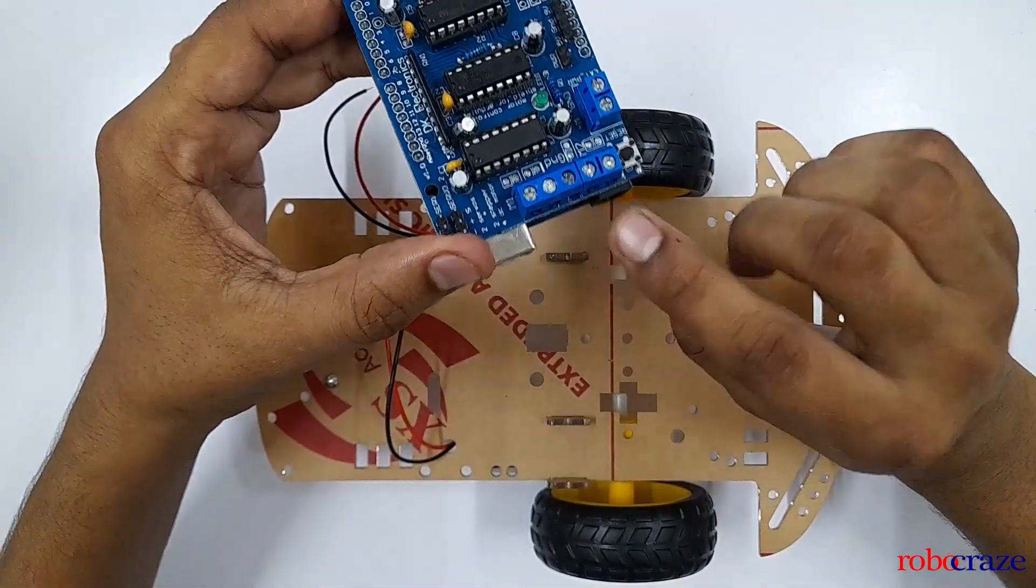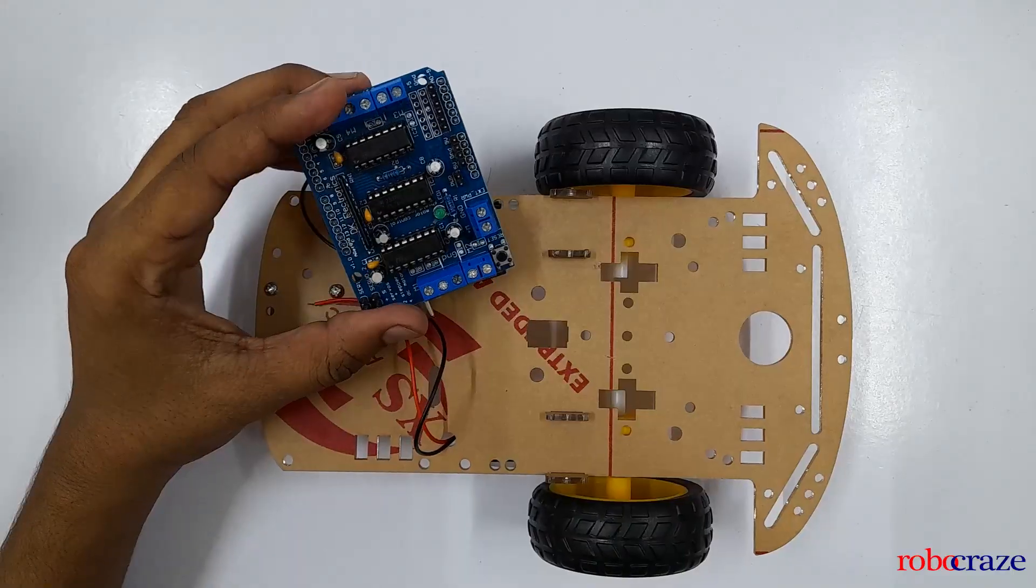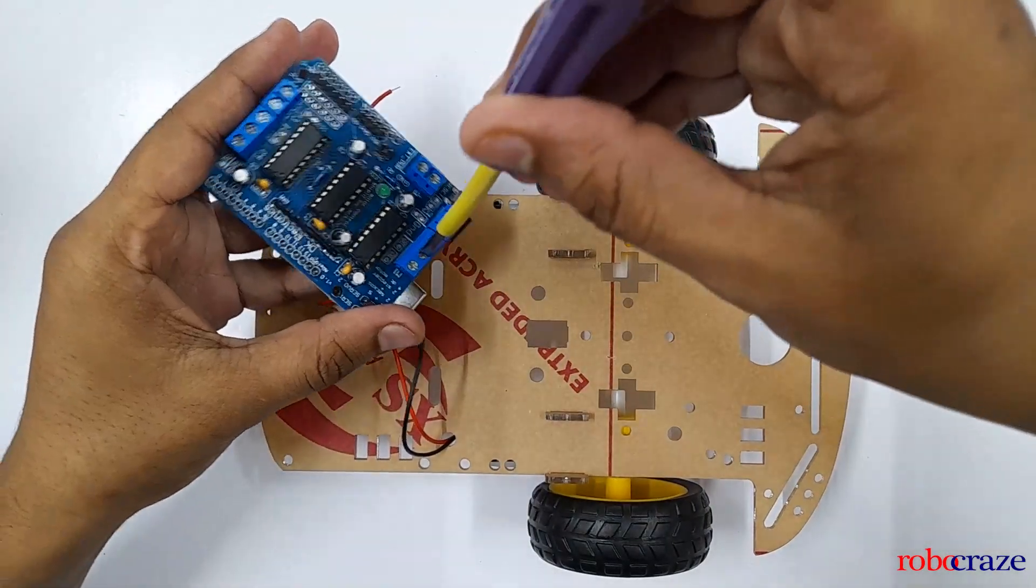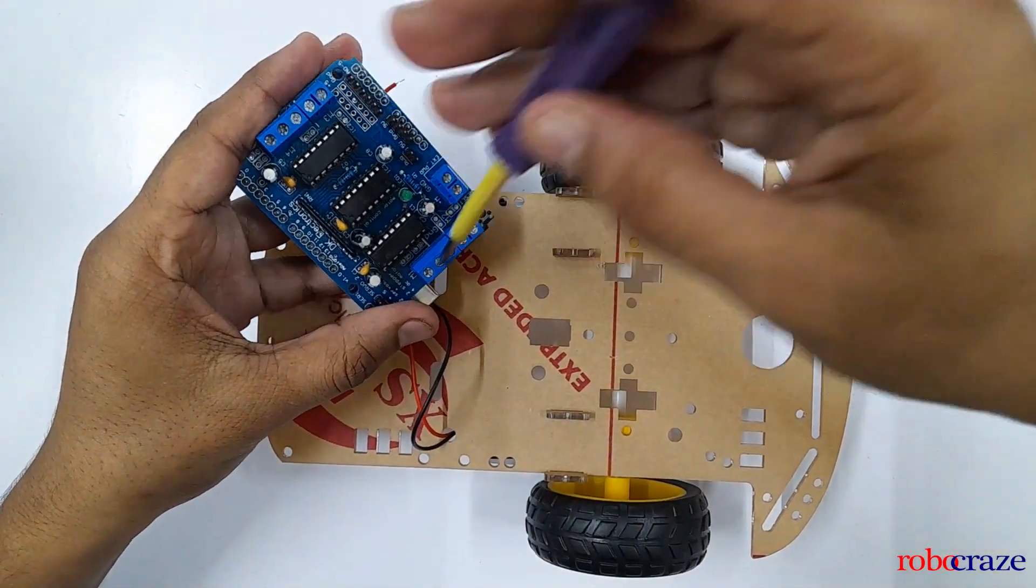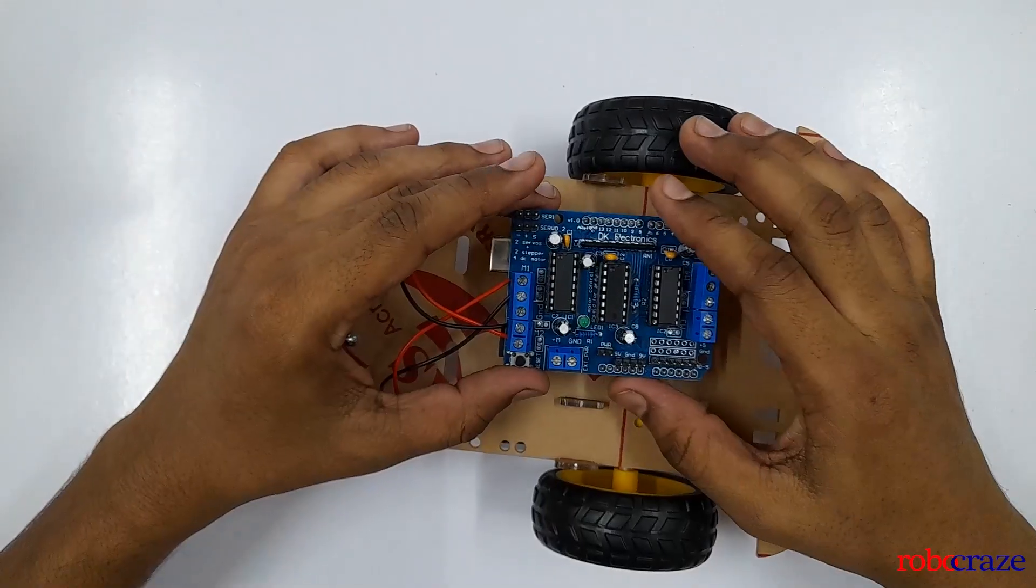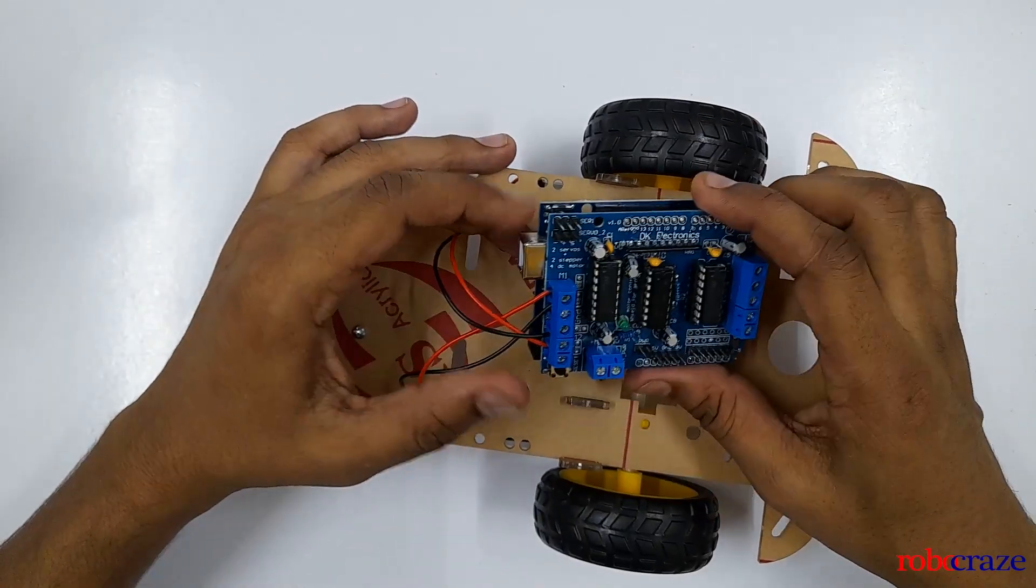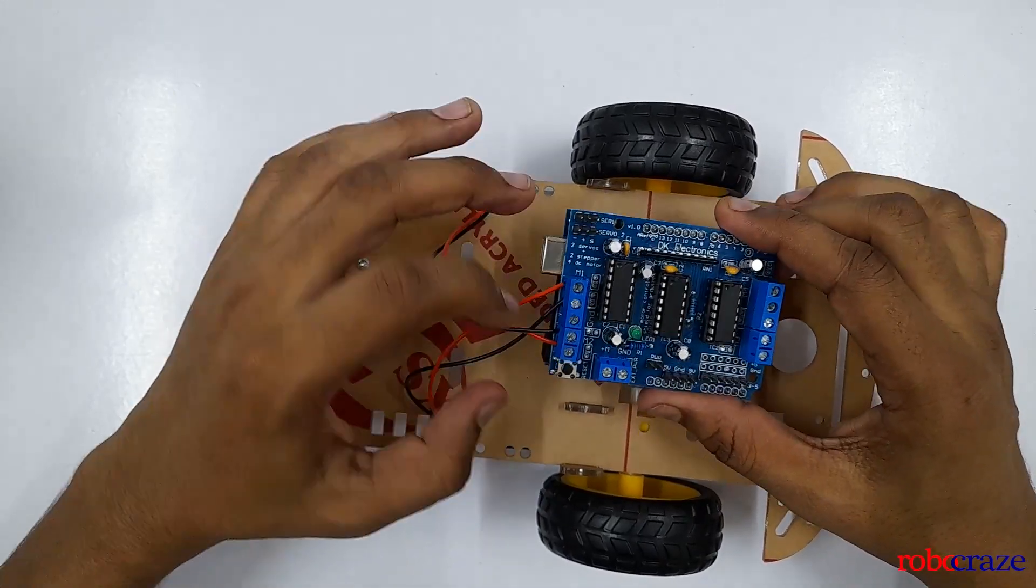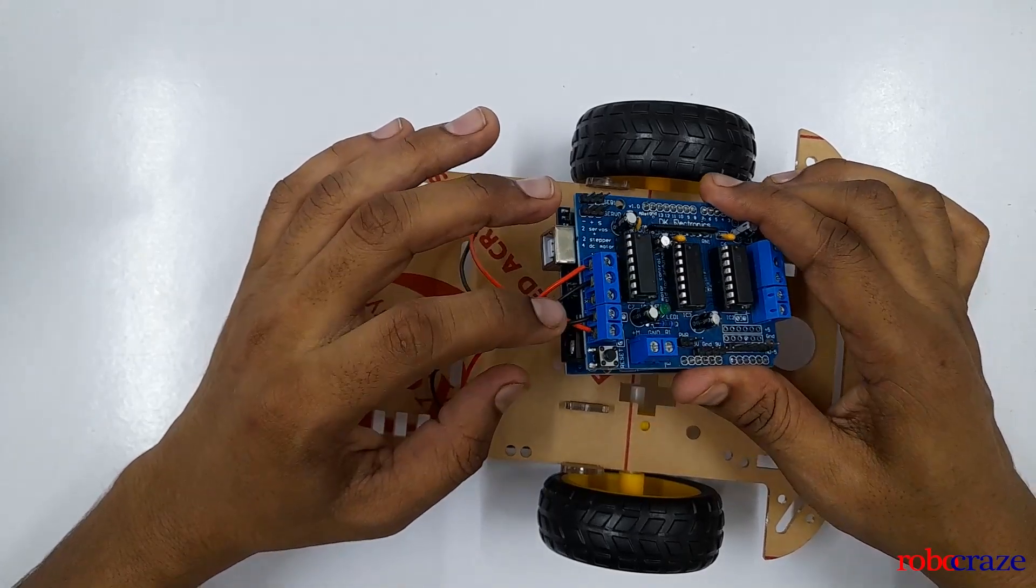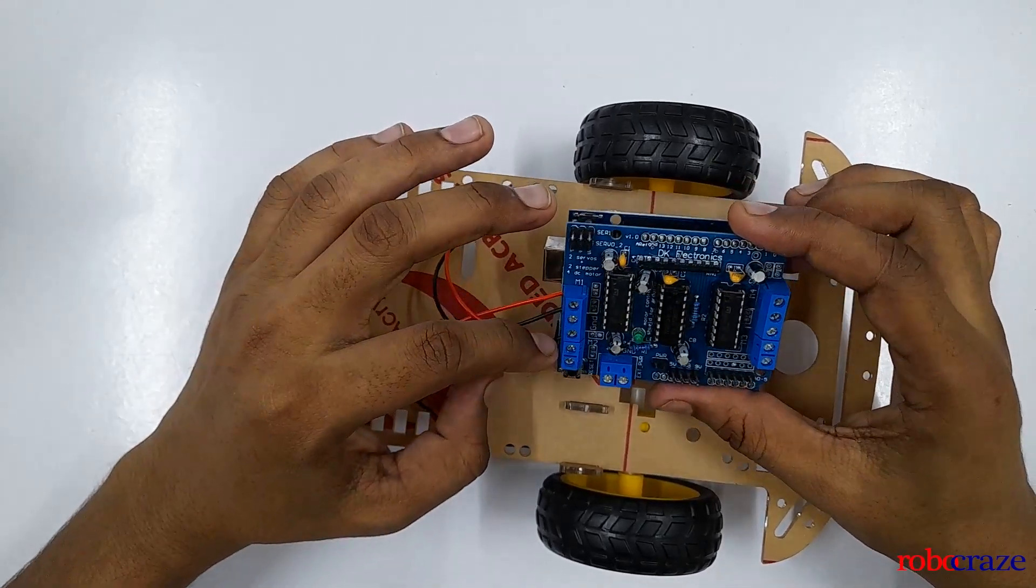M1 will always be the left motor. Should connect the left side motor to M1. While doing the connections be cautious and keep in mind that these red wires will come on the outer side and the black wires will come on the inside. M1 is the left motor and M2 is the right motor.